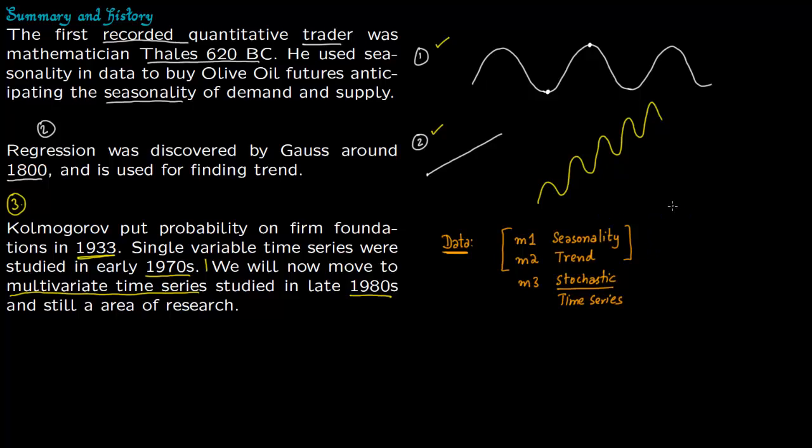Now what you do for prediction, you have to predict three models. You predict M1, you predict M2, you predict M3. Then you add, and then you get your final prediction.